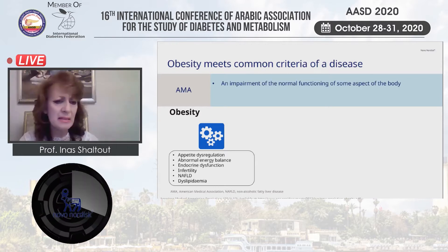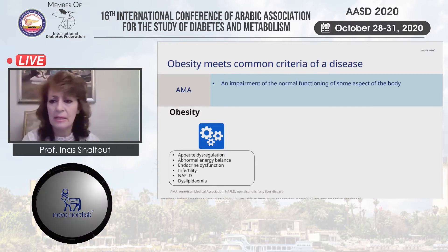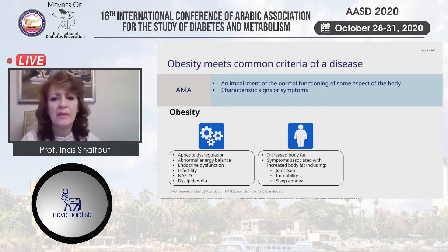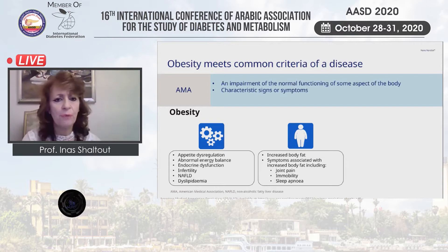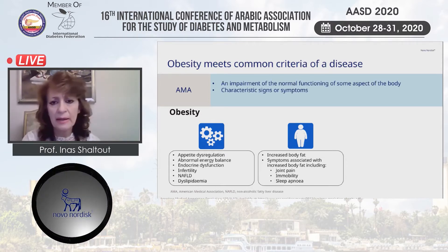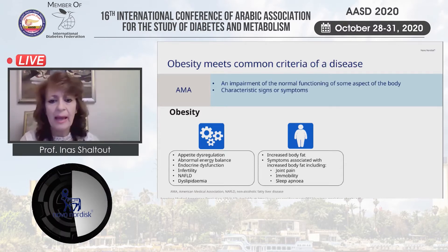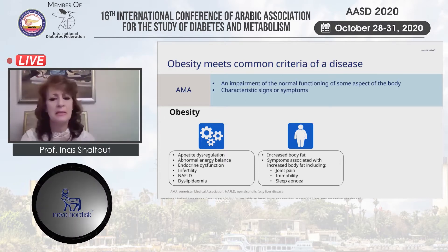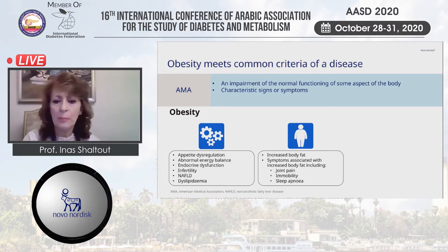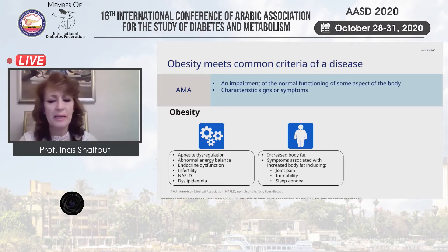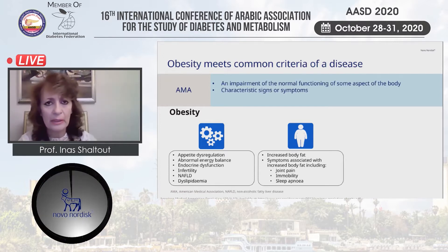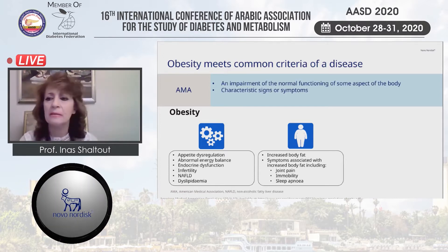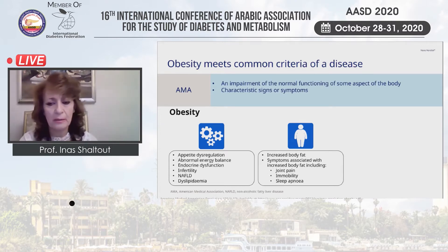Again, the American Medical Association stated that the criteria of a disease involves characteristic signs or symptoms, and this is shown in obesity with increased body fat. Symptoms associated with increased body fat lead to joint pains, immobility, sleep apnea, and other complications like depression, low self-esteem, and other metabolic and psychological complications.